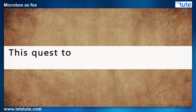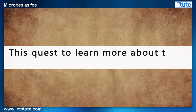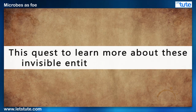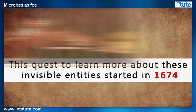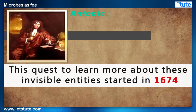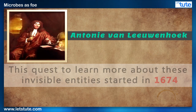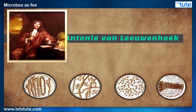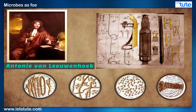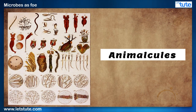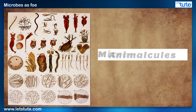This quest to learn more about these invisible entities started in 1674 when the Dutch scientist Anthony van Leeuwenhoek spotted tiny swimming microscopic animals while fiddling with his microscope. He called them animalcules, a term which was later replaced by the word microorganisms.